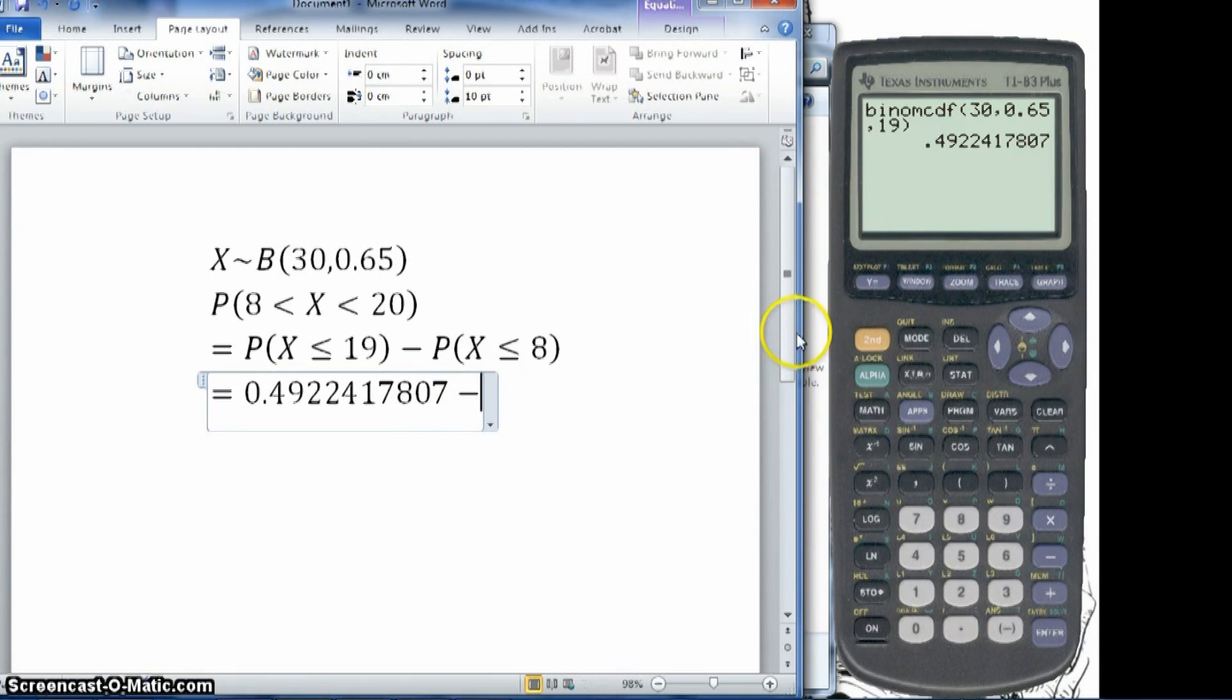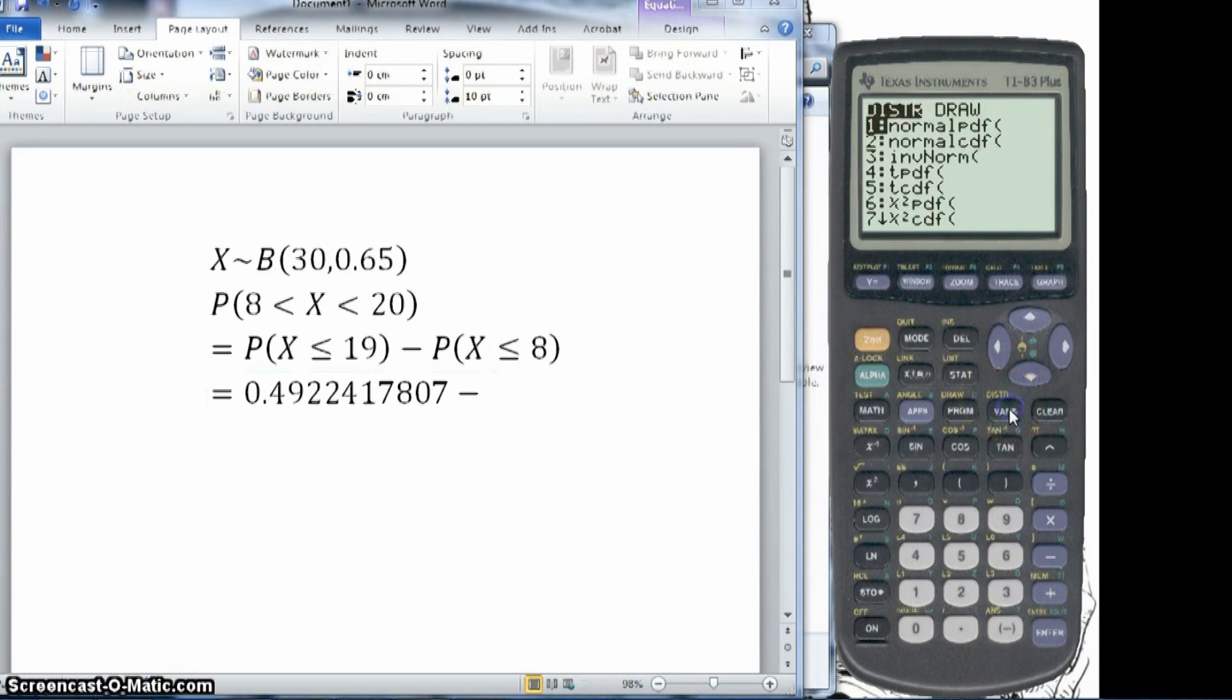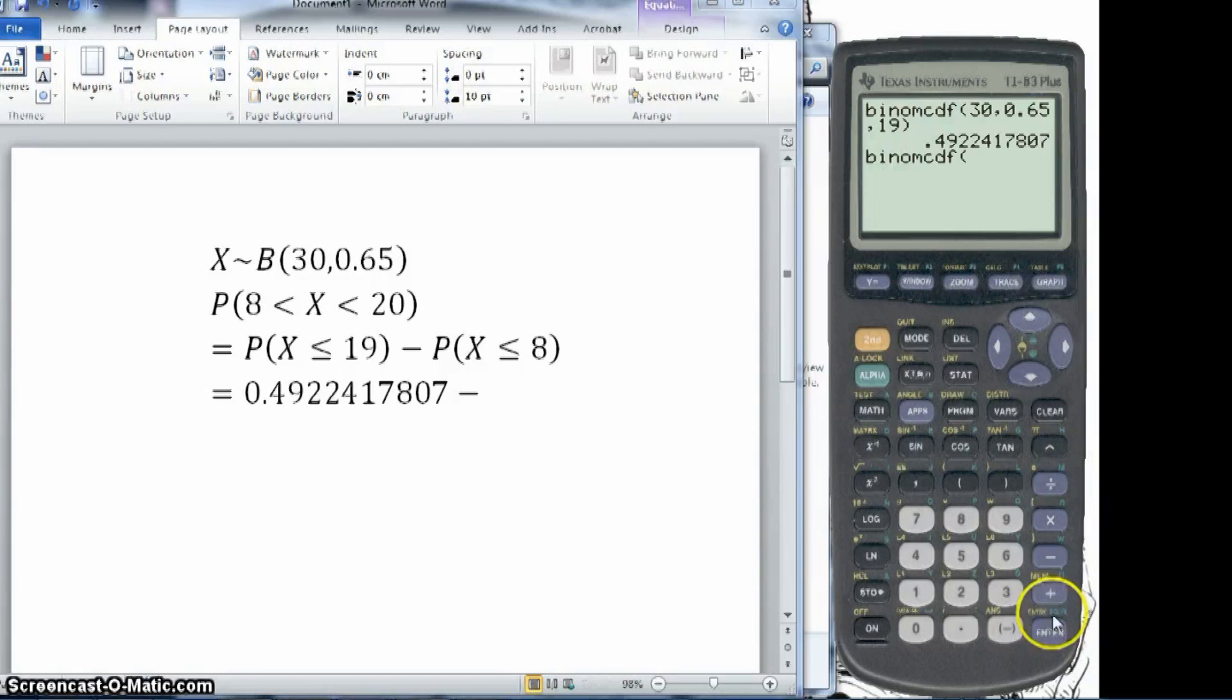And I'm going to subtract. I'm going to do the same thing again. So 2nd, VARS, and then going to your distributions. Down to binom CDF. Same values for N. Same values for P. And then it's the X value that's different, because this time I'm looking at 8. Close the bracket.